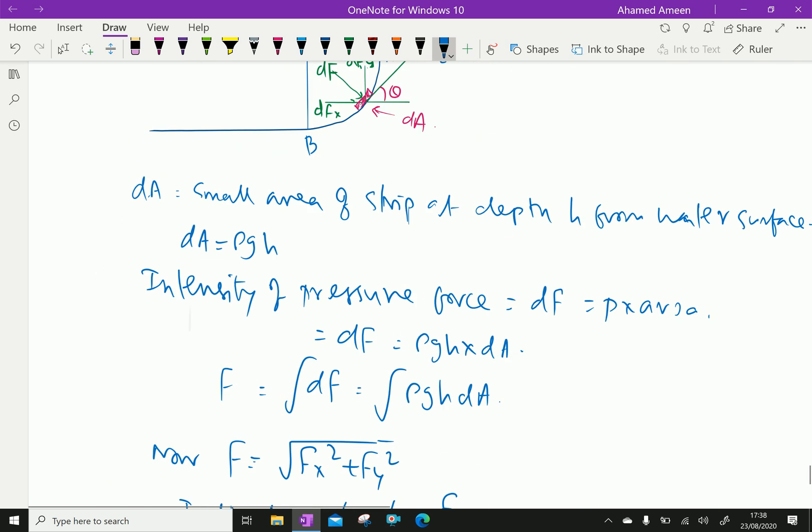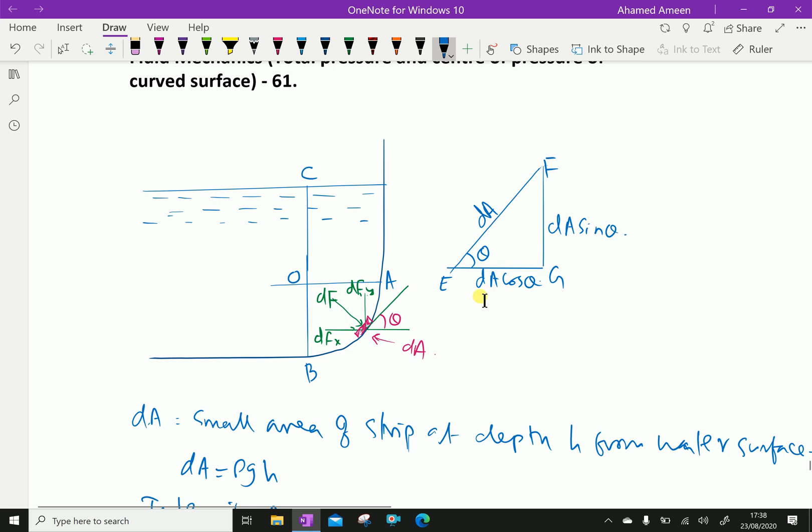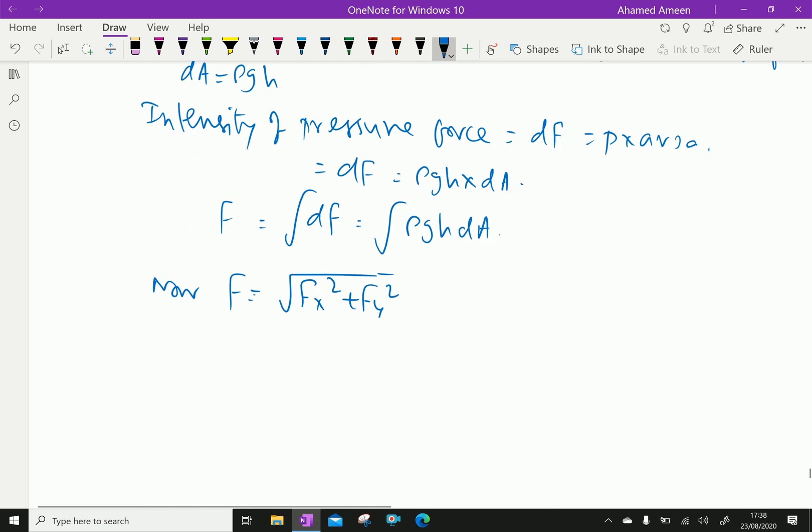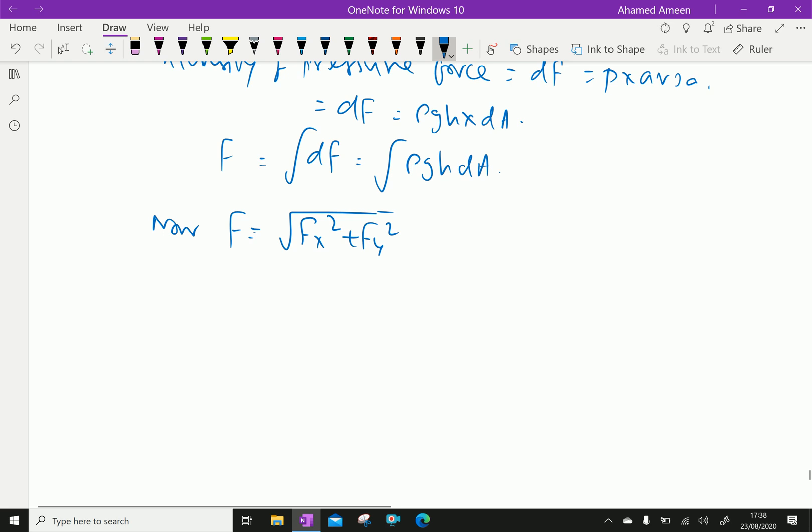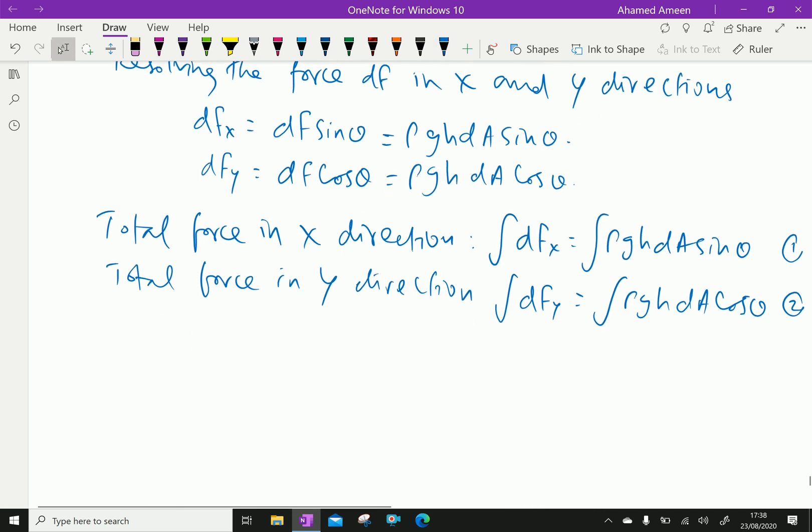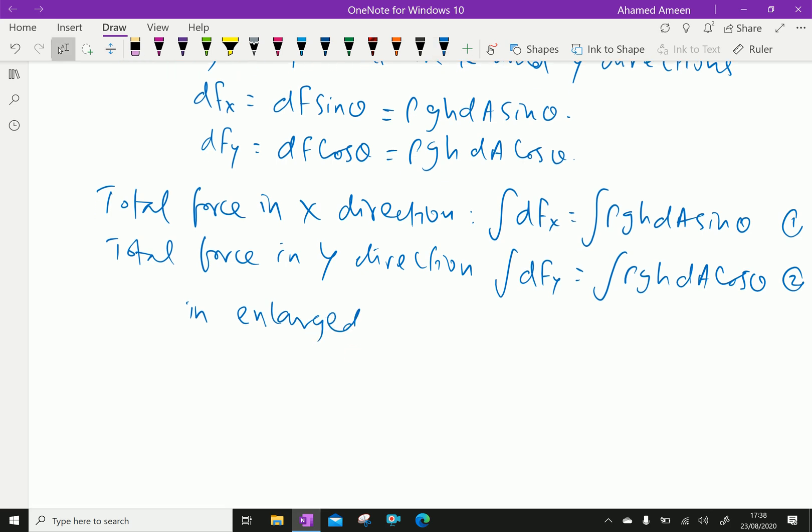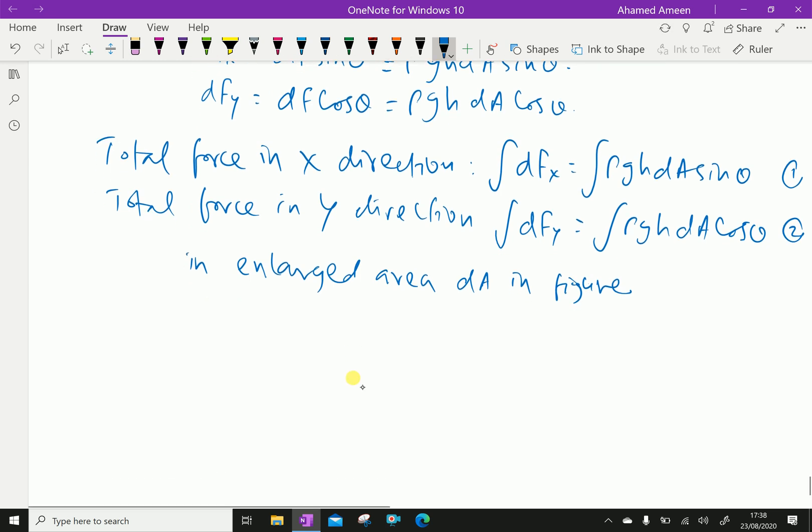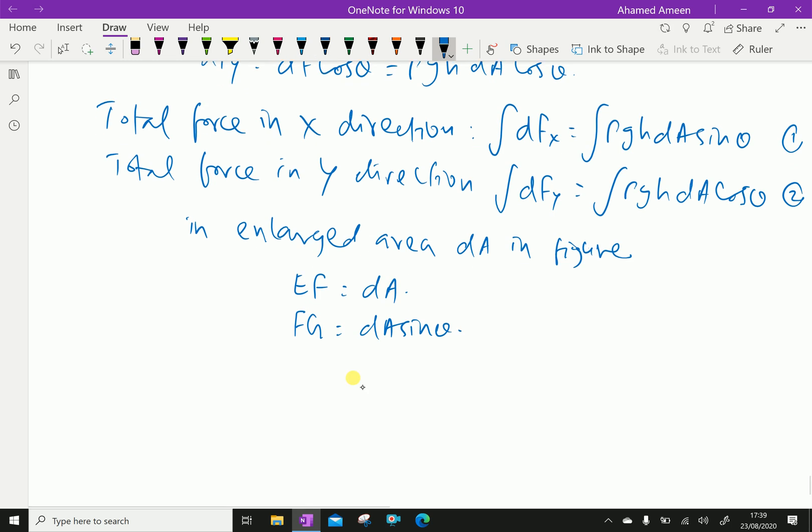In the enlarged area figure, we have EF = dA, FG = dA sin θ, and EG = dA cos θ.